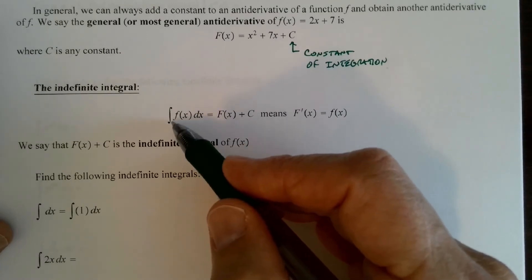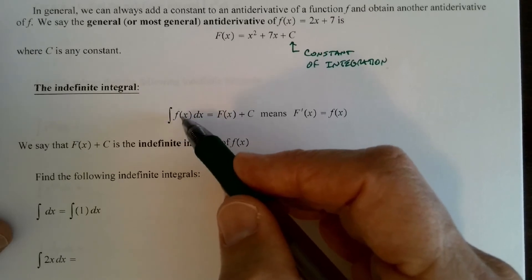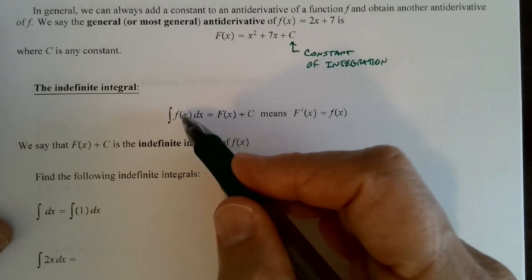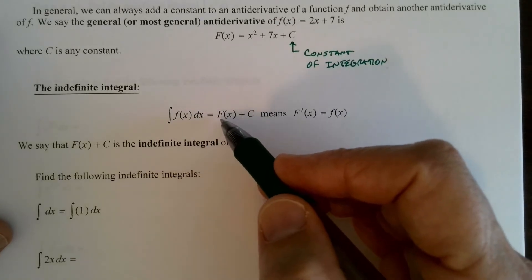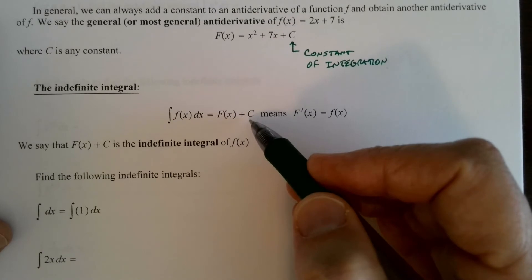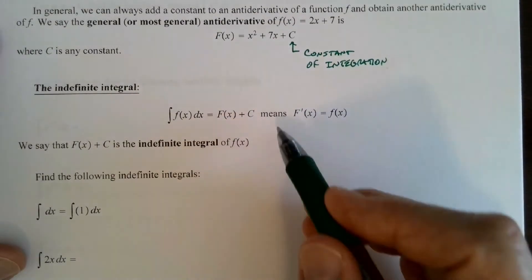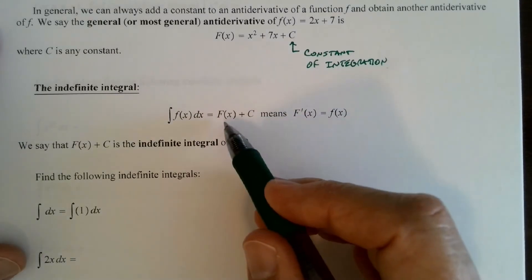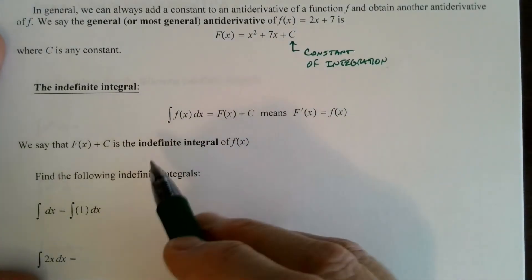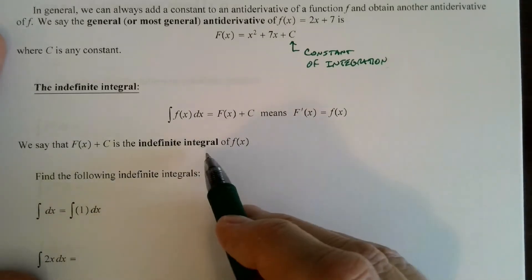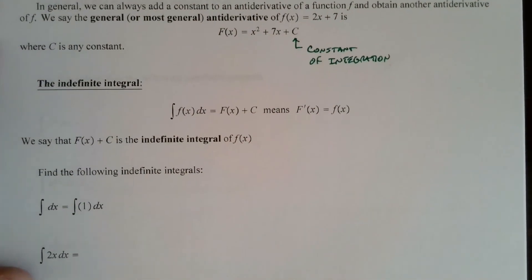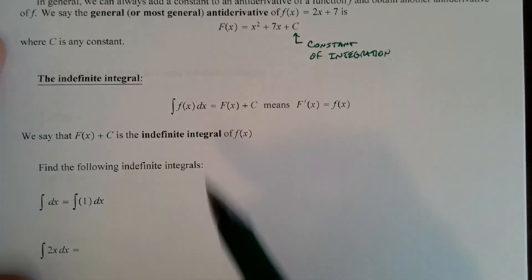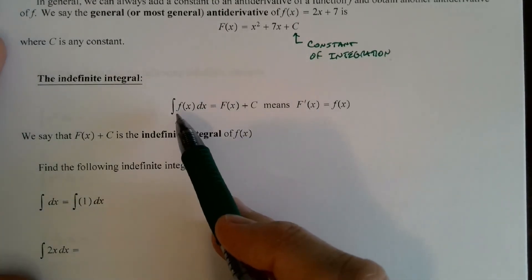This notation means find the anti-derivative of little f. So if the integral of little f with respect to x is capital F of x plus c — because all anti-derivatives differ by this constant — then the derivative of capital F is little f. Capital F is the anti-derivative, and F of x plus c is the indefinite integral. Anti-derivative and indefinite integral refer to the same thing; they are interchangeable.